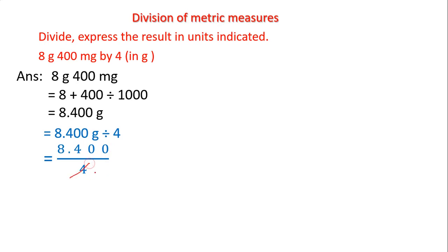4 ones are 4. Next, 8 is there. 4 twos are 8, 8 minus 8, 0 as the remainder. There is a decimal point, place the decimal point. Next digit is 4. 4 ones are 4, 4 minus 4, 0. These two zeros are there, so we have to divide these two zeros also. Four zeros are zero.